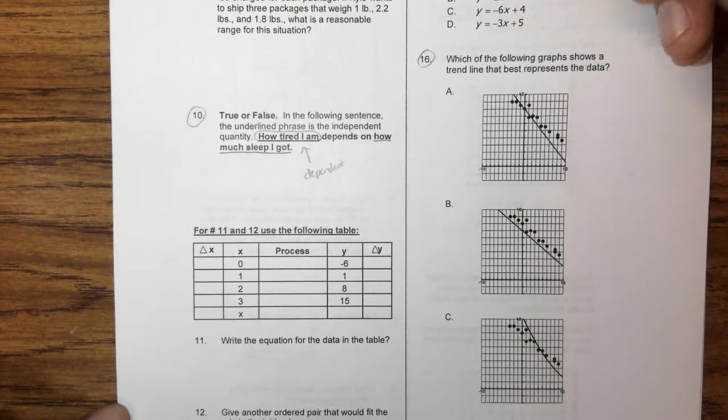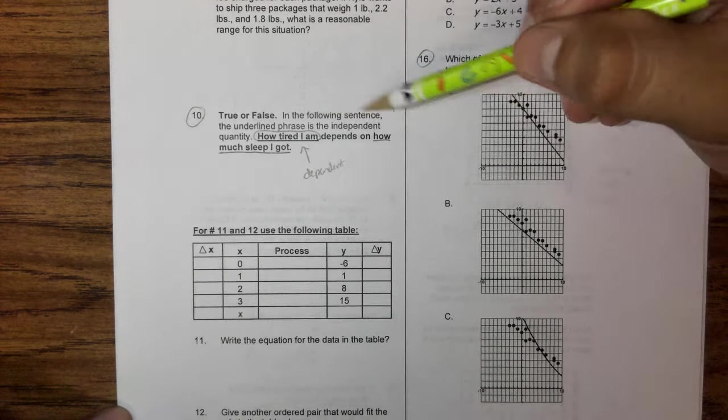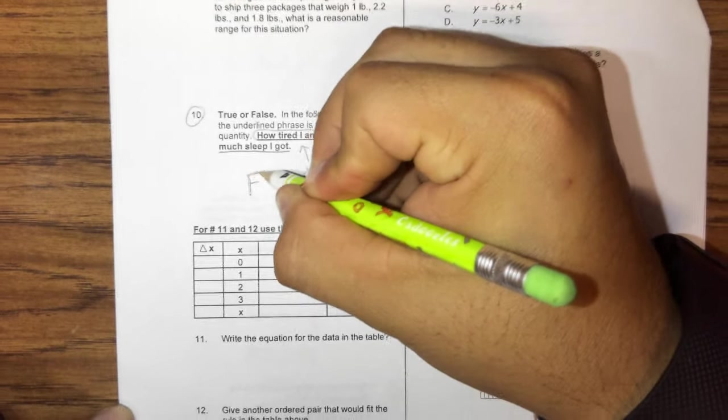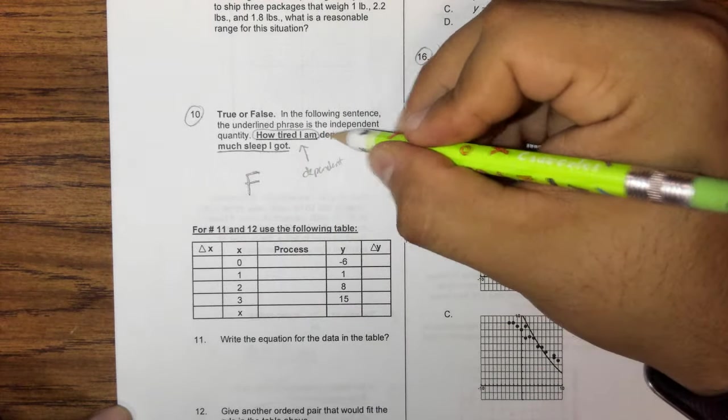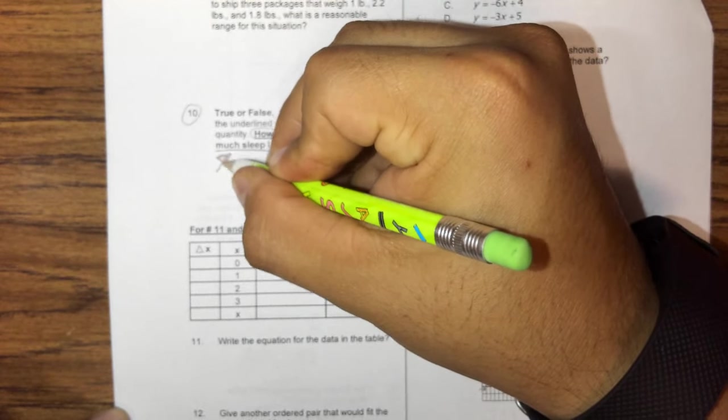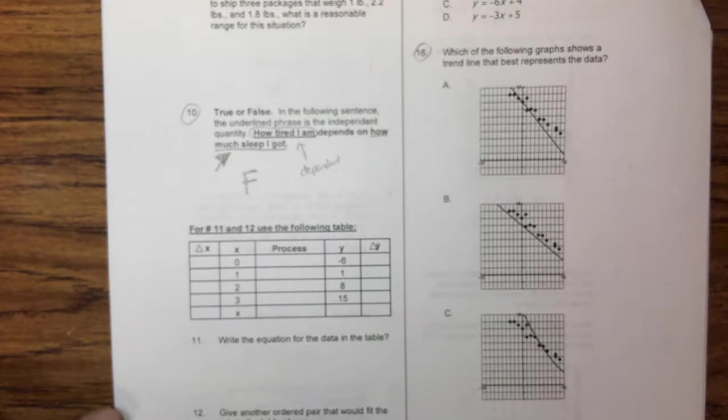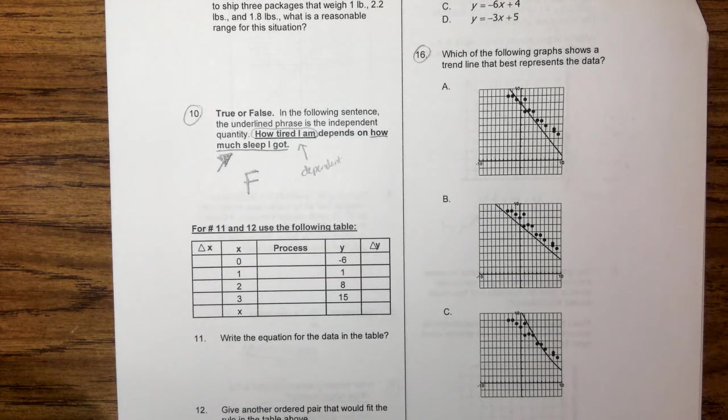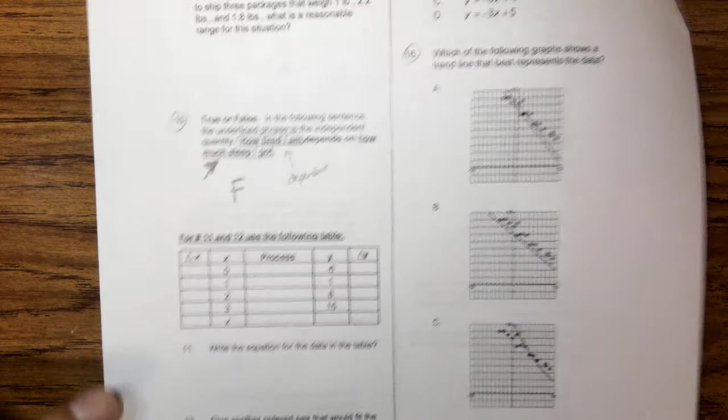And the thing that it depends on is going to be my independent, which is how much sleep I got the night before. So it says, again, we go back to read our question. It says, in the following sentence, the underlying phrase is the independent quantity, and this is going to be false. False because the independent, the thing that I can't really control, is going to be how much sleep I got. My fatigue depends on how much sleep I got.